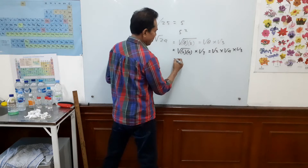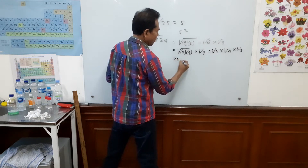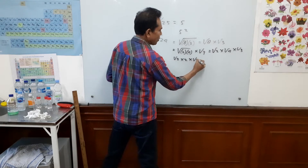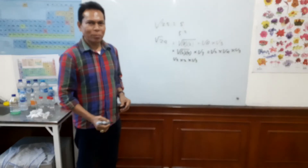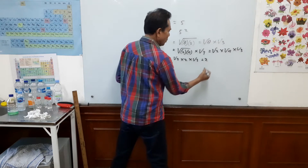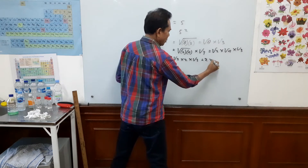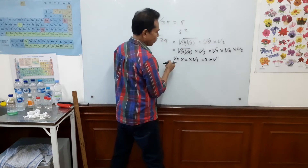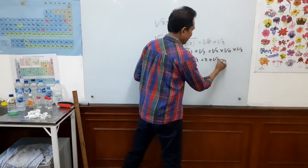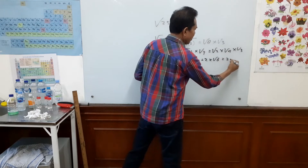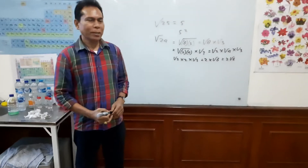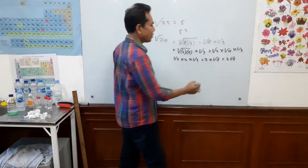So now we have square root 2 times 2 times square root 3. We have 2 times square root 2 times square root 3, and square root 2 times square root 3 is square root 6. So this is 2 square root 6. Okay, that's the first way.